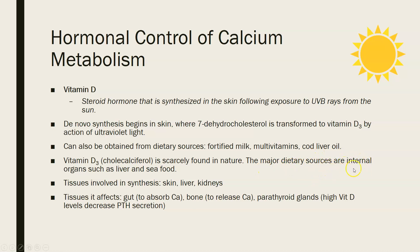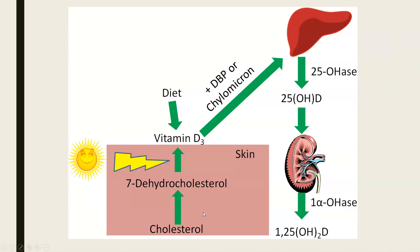Major dietary sources of vitamin D include internal organs like the liver and seafood. The tissues involved in vitamin D synthesis are the skin, liver, and kidneys. The tissues affected by vitamin D include the gut, where it allows calcium absorption; the bones, where it causes calcium release to maintain blood levels; and the parathyroid glands, where high vitamin D levels decrease PTH secretion.